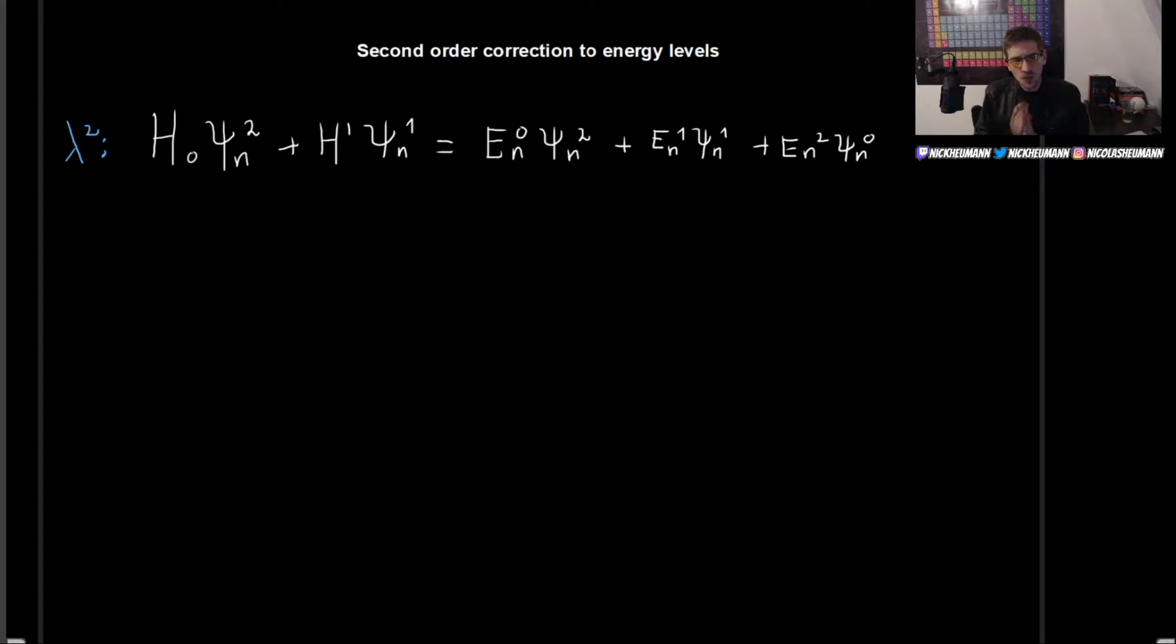Welcome. In the previous video, we derived the expressions for the first order correction to the energy levels as well as the first order correction for the wave functions. Now, in this video, we will derive the second order correction for the energy levels. The second order correction for the wave function is not something that interests us when we are using the current method of perturbation theory. We will discuss such things later when we deal with other methods. So for now, let's just focus on getting the second order correction to the energy levels.